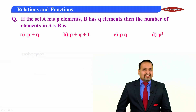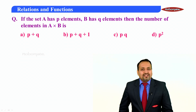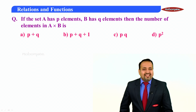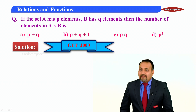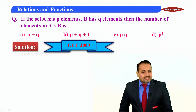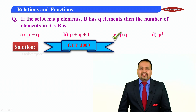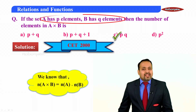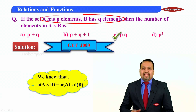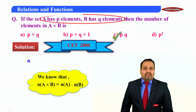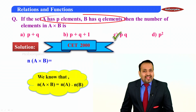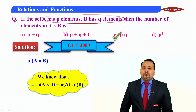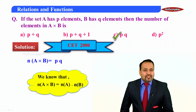Next question: if set A has p elements and B has q elements, then the number of elements in A cross B is — four options given. This question appeared in CET 2000. The correct answer is option C. We know that n(A cross B) = n(A) × n(B), so here n(A cross B) = p × q. Therefore, the answer is pq.